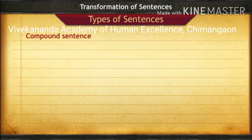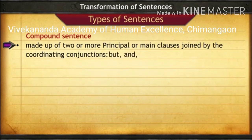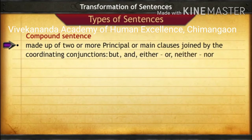The second type of sentence is a compound sentence. It is made up of two or more principal or main clauses joined by coordinating conjunctions such as but, and, either, or, neither, nor. These are the conjunctions which join two or more clauses.